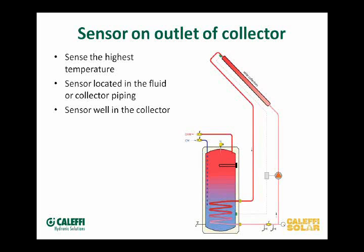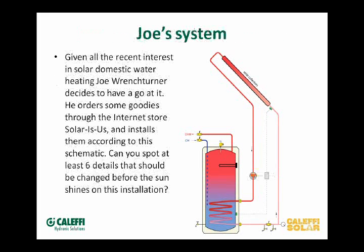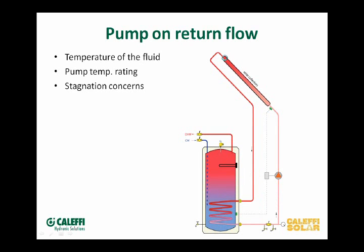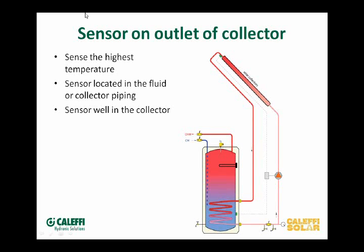The next thing is the location of the sensor. In the mistake drawing, the sensor is on the bottom of the collector — the cold side, because the fluid is coming from the tank being pumped up through the collector. That's not going to accurately read what's going on inside that collector. The sensor really needs to be at the hottest point in the array, which is on the discharge piping or near the top of the collector.